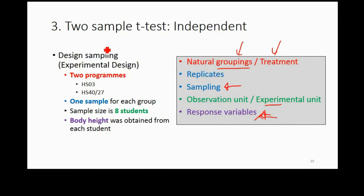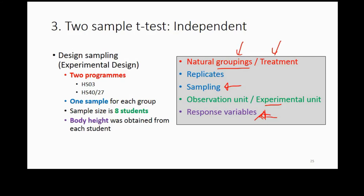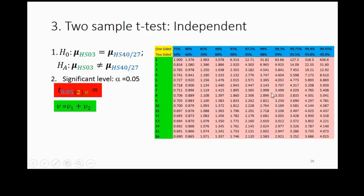Describe the experimental design in general first, then go into the detail. For sampling, describe how you set up the method — for example, set up the pitfall trap, leave it for how many days, how many hours — then describe how you will record the response variable, for example using a ruler to measure the length. Don't mix these together; describe the overall design first, then go into the detail.